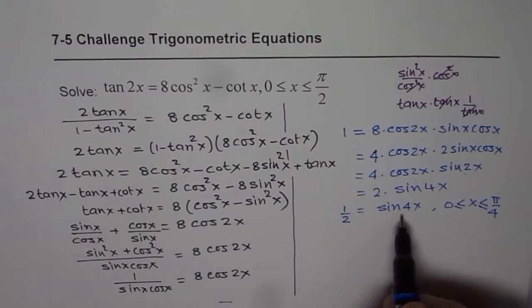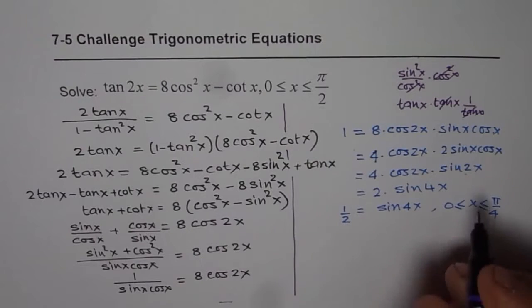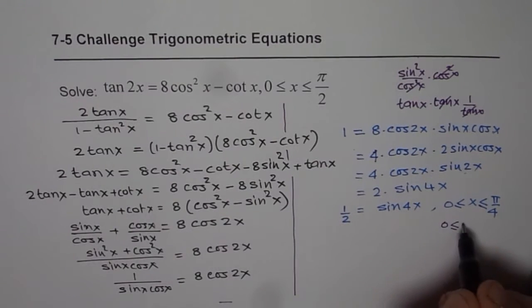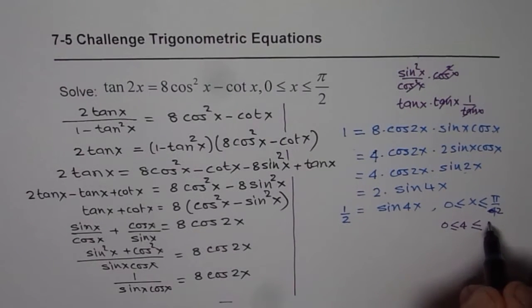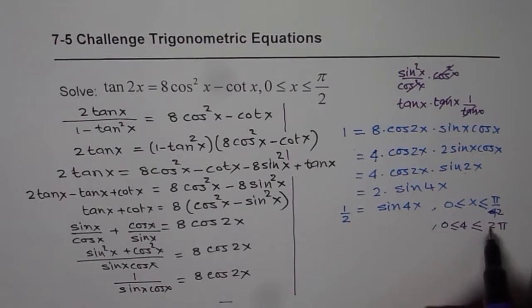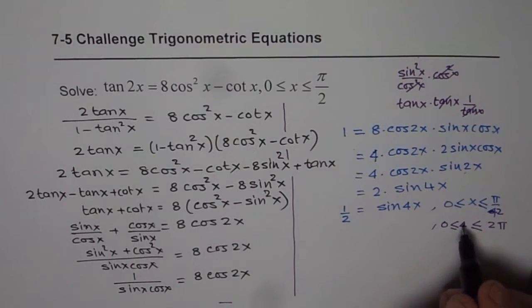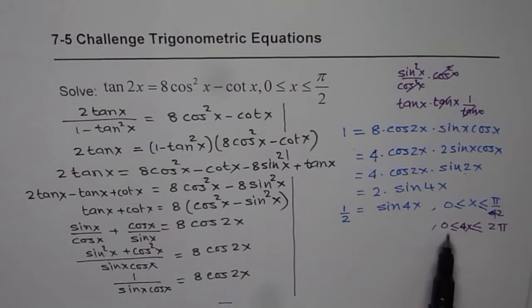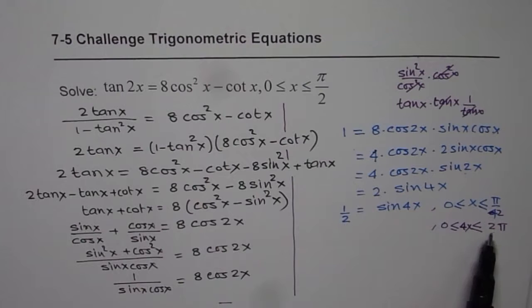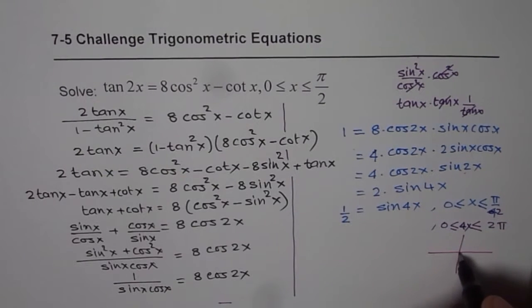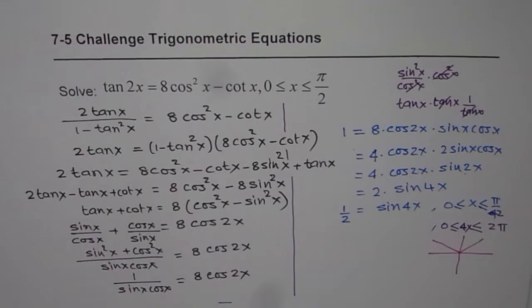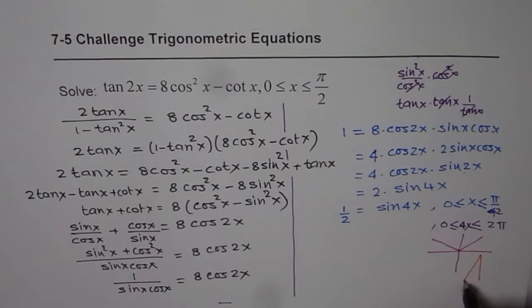For sine of 4x, multiply by 4. So this is pi by 2, when you multiply by 4 you get 2 pi here. Within that period we are looking for the value - the domain for 4x is between 0 to 2 pi. Now when is sine half? We know sine is half in quadrant 1 and in quadrant 2, these two values. So what are these angles?